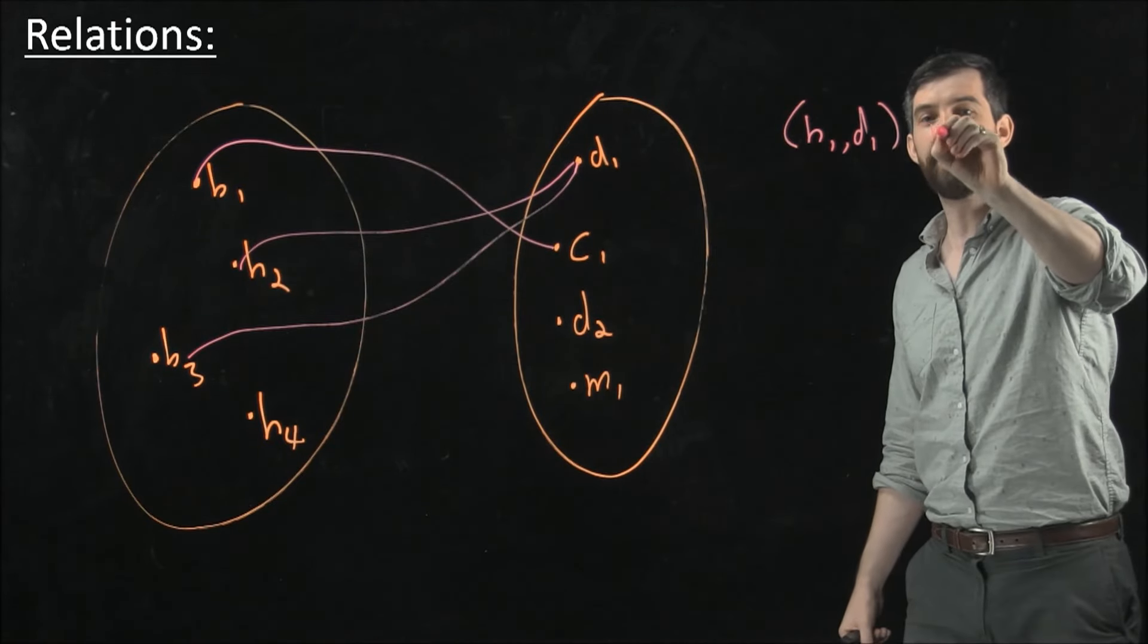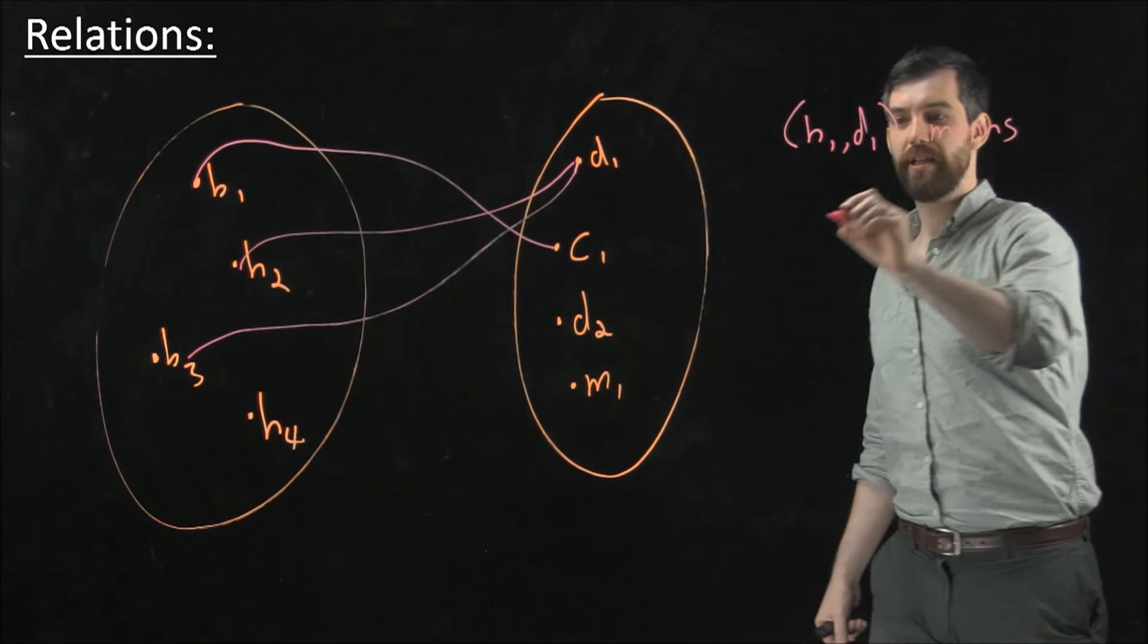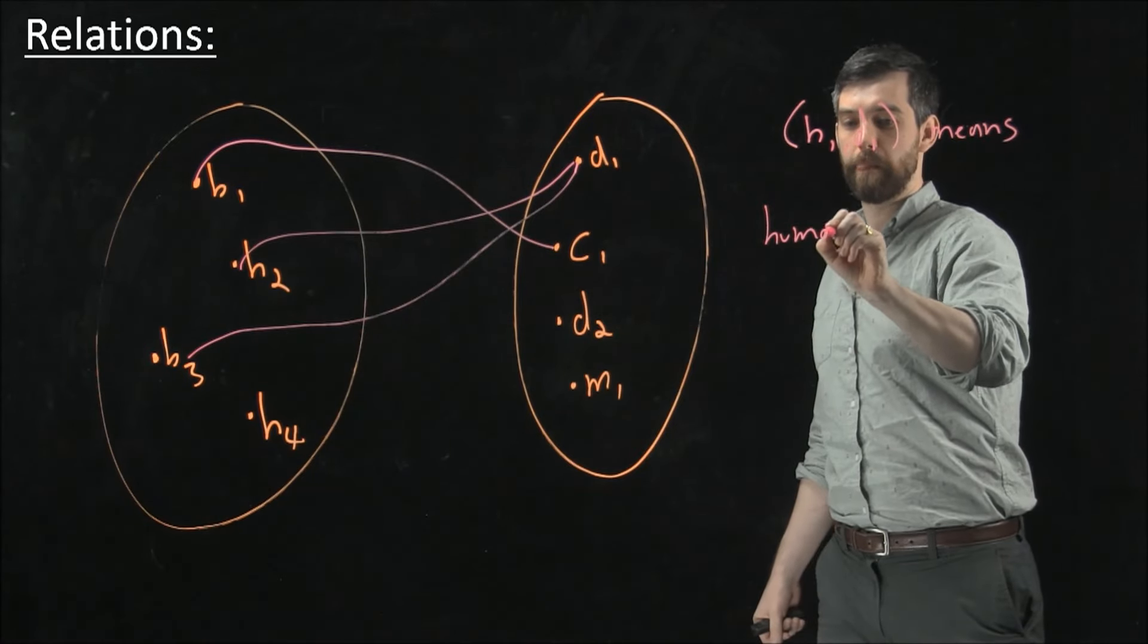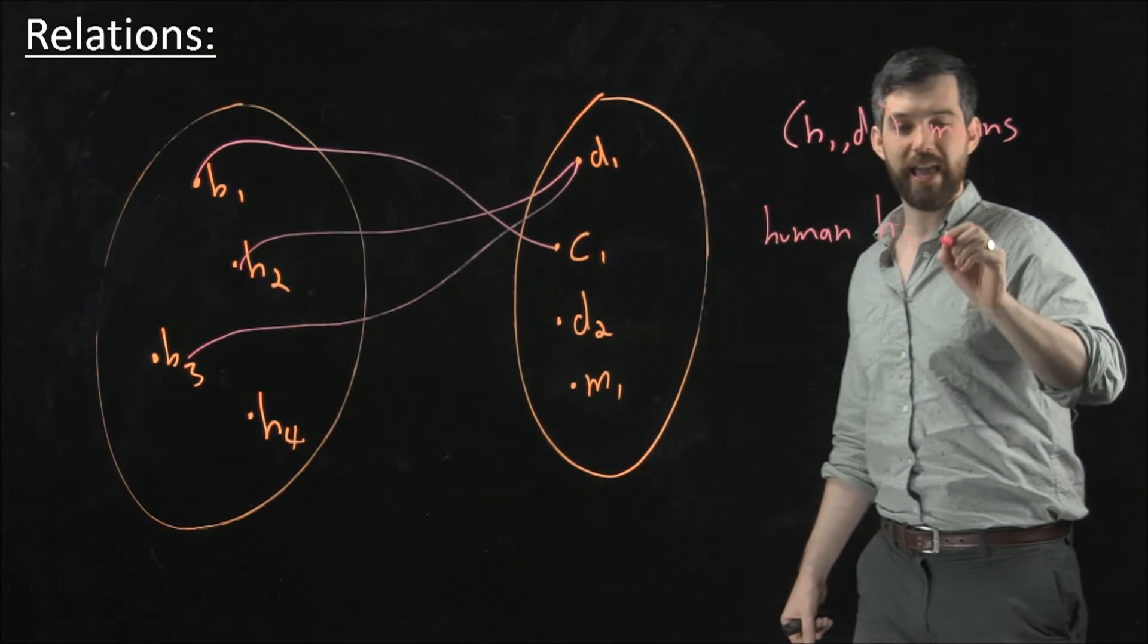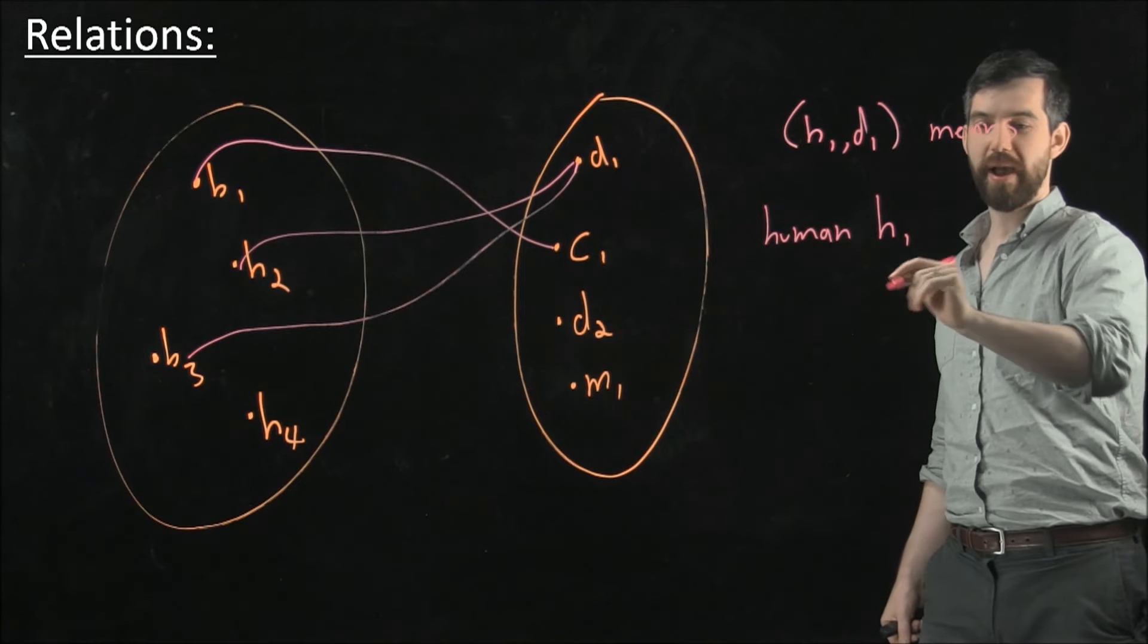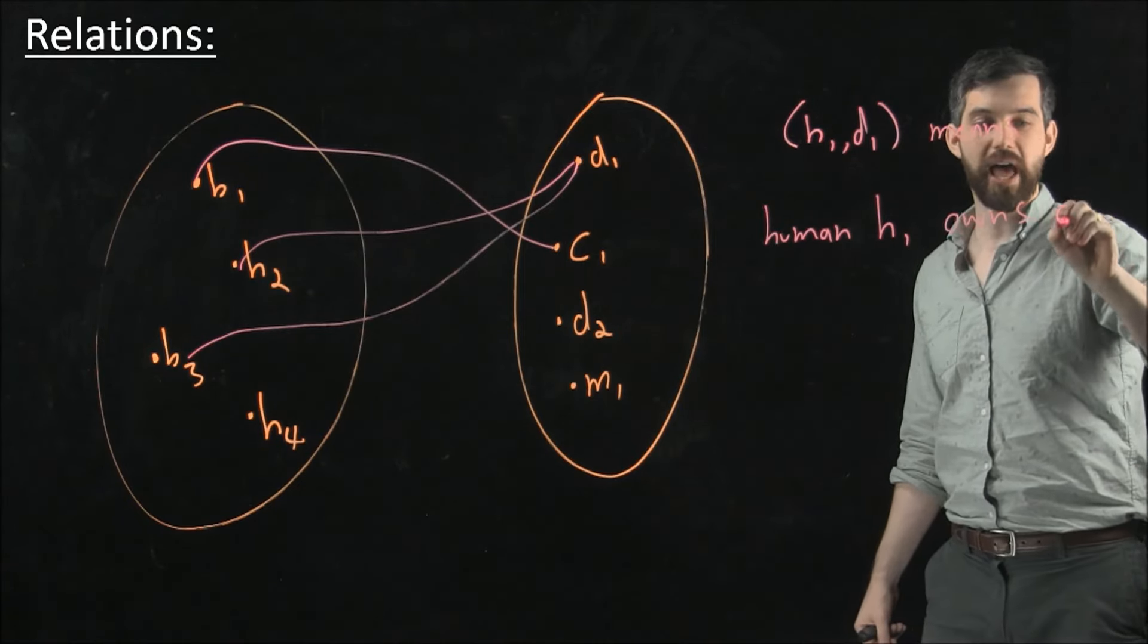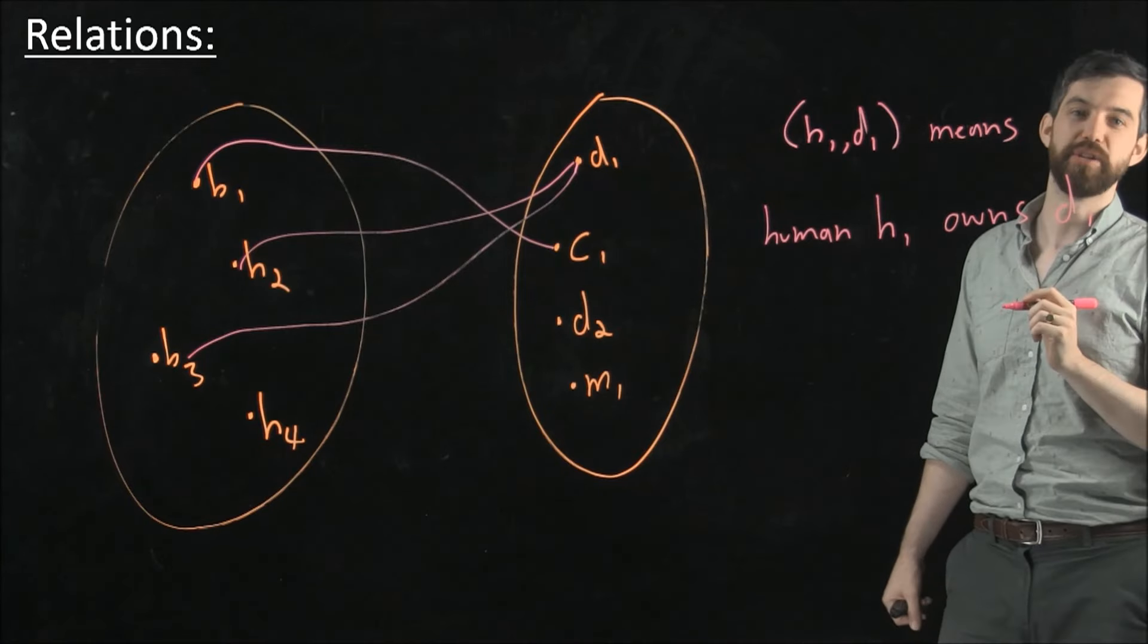So we can say that a particular ordered pair like H1D1, that this means that the human that we've denoted by H1 owns the pet that I have denoted by D1.